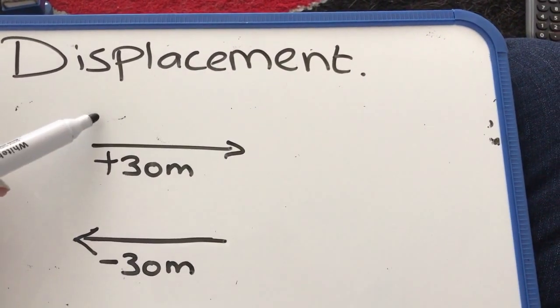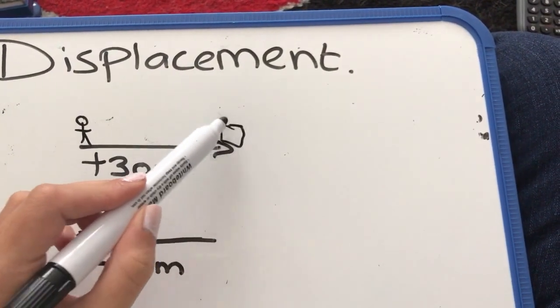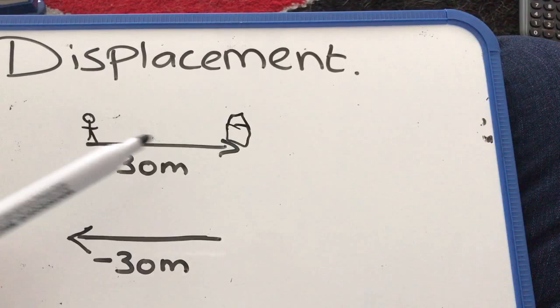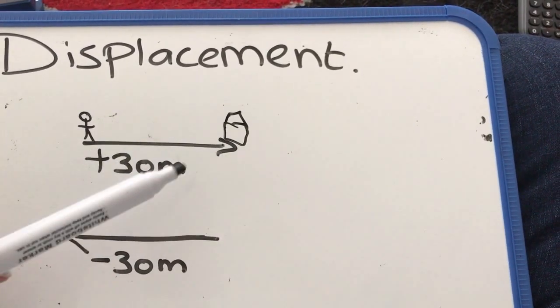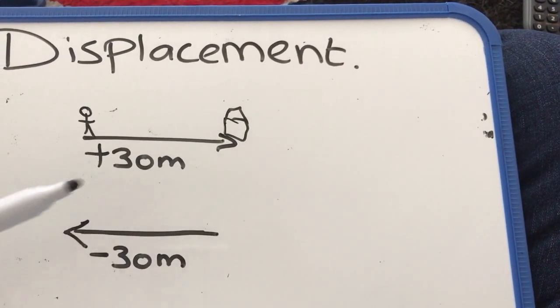If this was somebody going to, say they were going to the shop, the shop's at the end here and it was 30 metres away, how handy would that be? They walk 30 metres, their distance is 30 metres, then they walk 30 metres back.